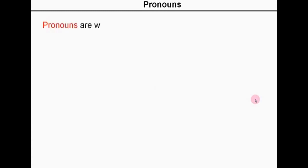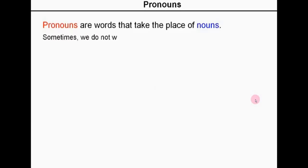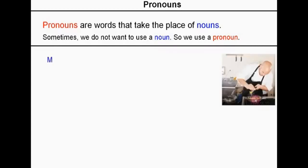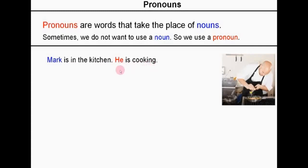Pronouns. Pronouns are words that take the place of nouns. Sometimes we do not want to use a noun, so instead we use a pronoun. For example: Mark is in the kitchen. He is cooking. We can see Mark is a noun, but for the second sentence, we don't want to repeat the word Mark. So we replace the word Mark with 'he'. That is an example of a pronoun — it represents a noun.